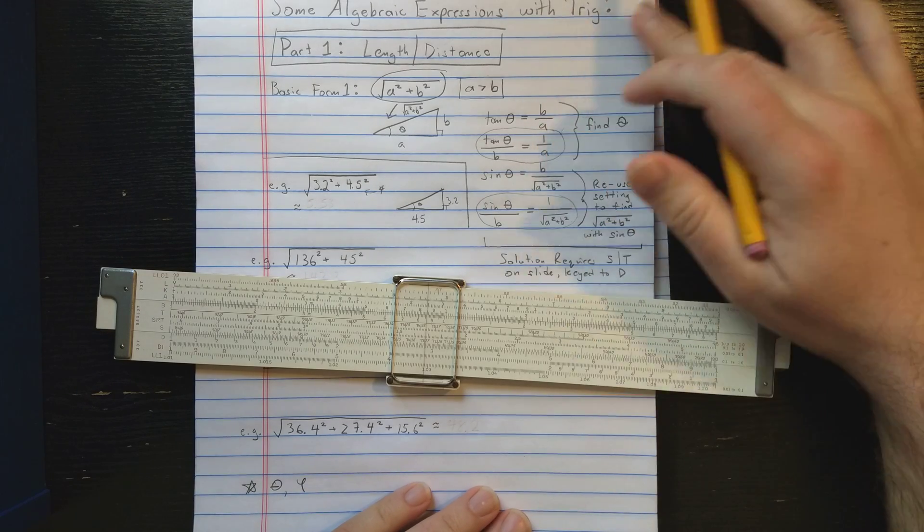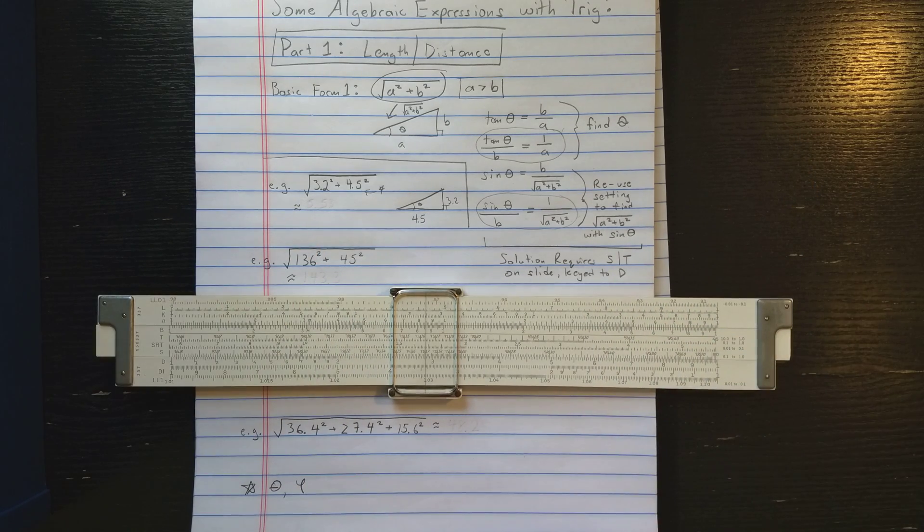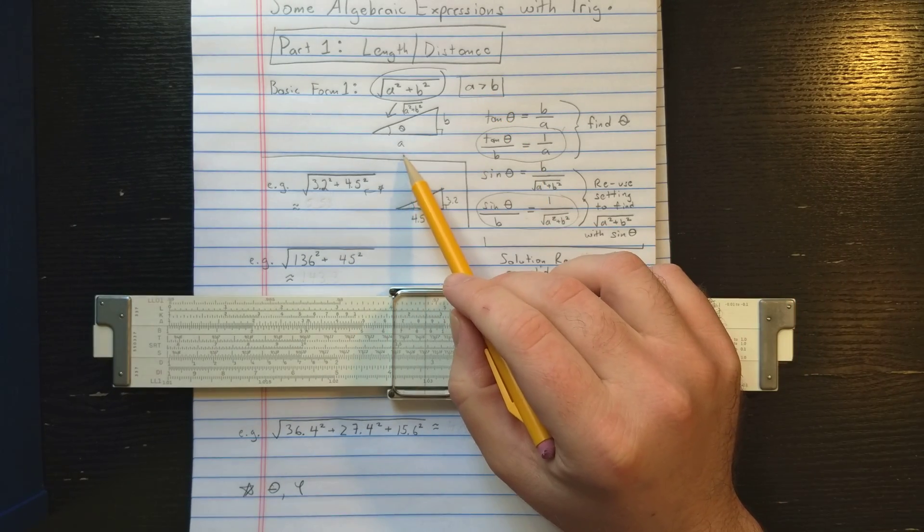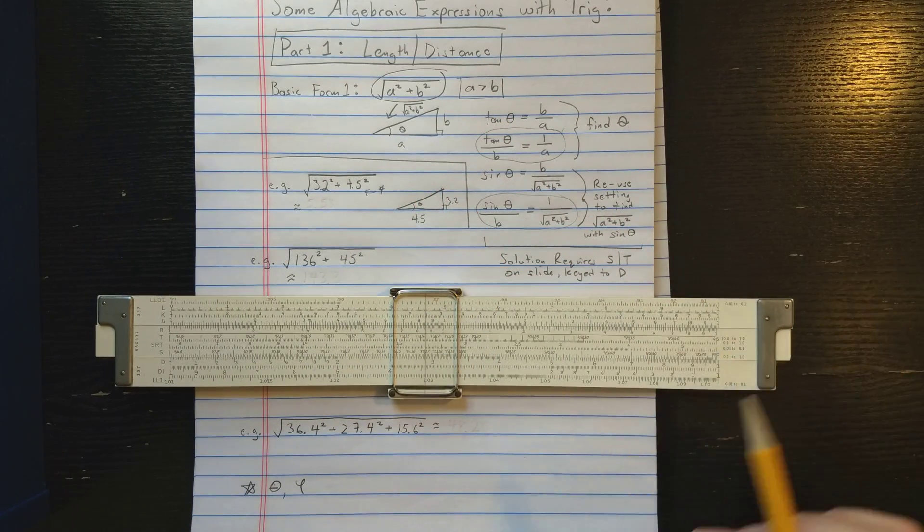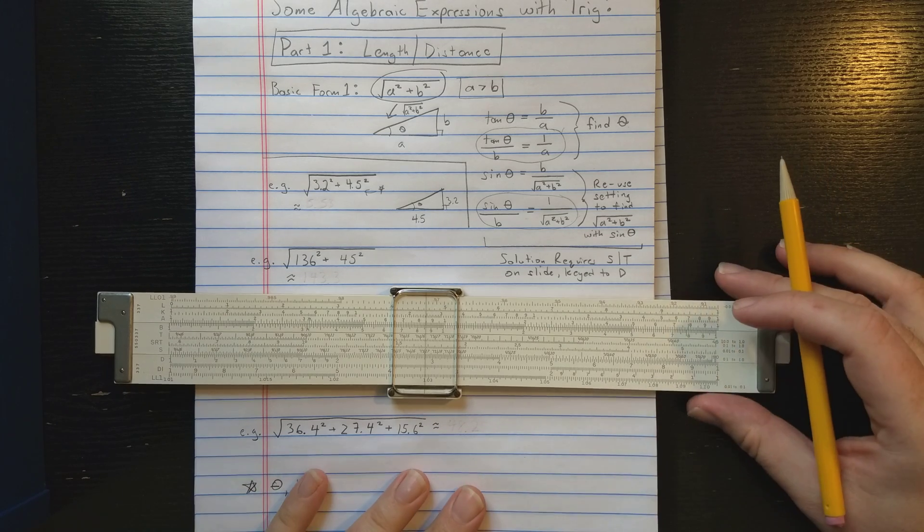If you're not familiar with the standard trig settings, you might want to review those, but you don't necessarily need to know that going into this video. So the reason I'm going to start with the larger side is so that when I use the T scale, the angle I get is less than 45 degrees.